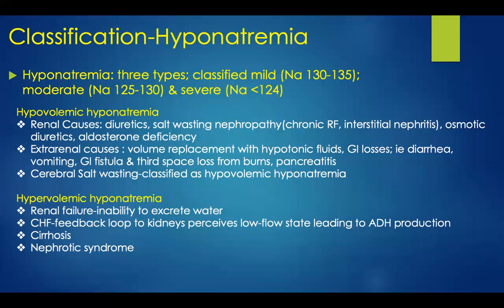We can further break down hyponatremia by various conditions. There are three types: mild, which is a serum sodium of 130 to 135; moderate, 125 to 130; and severe, anything less than a serum sodium of 124.